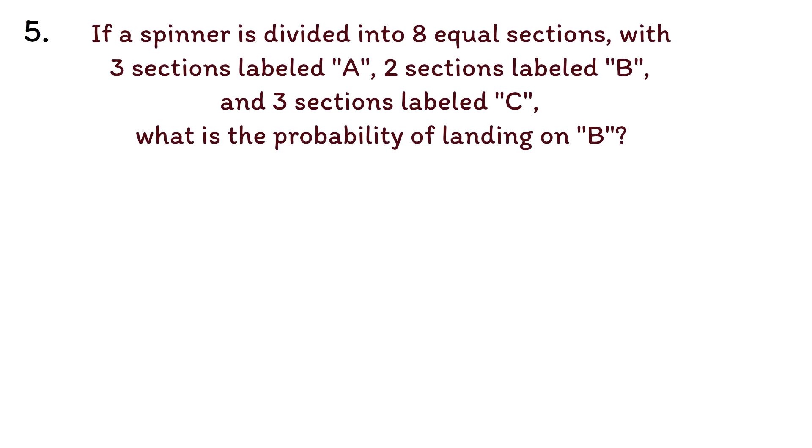Question 5. If a spinner is divided into 8 equal sections, with 3 sections labeled A, 2 sections labeled B, and 3 sections labeled C, what is the probability of landing on B?